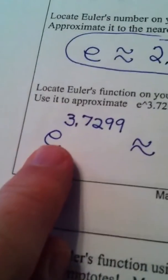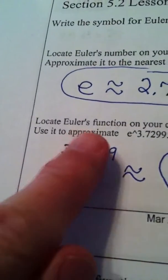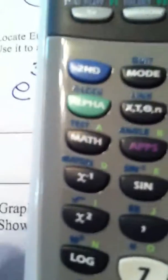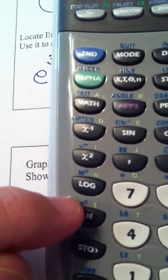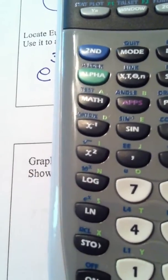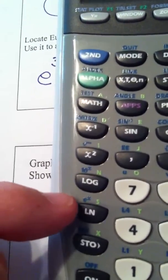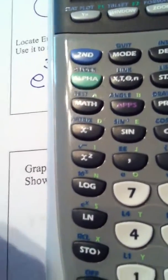Well, Euler's function is the function that takes Euler's number and raises it to a power. And if you look above the natural log key, you see e to the x. And that e to the x is called Euler. It's actually Euler's number, but turned into a function. It's an exponential function.